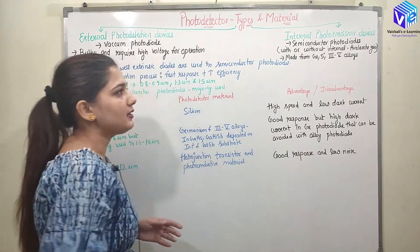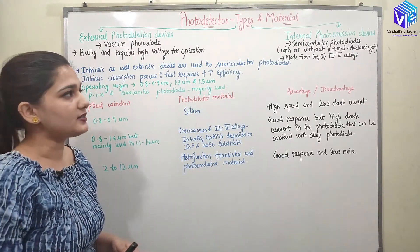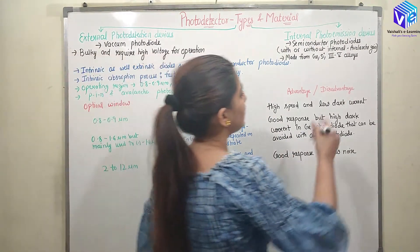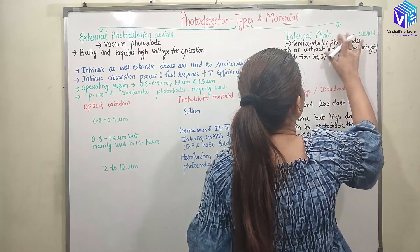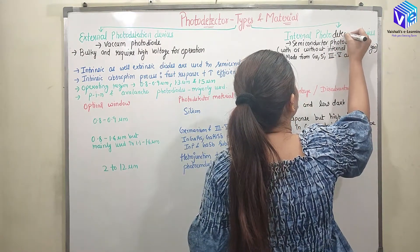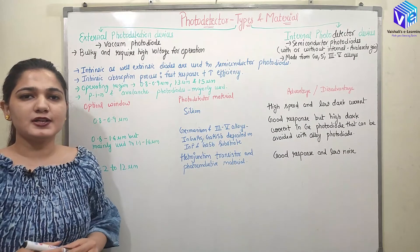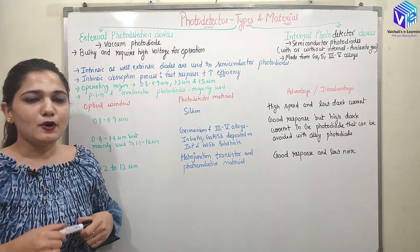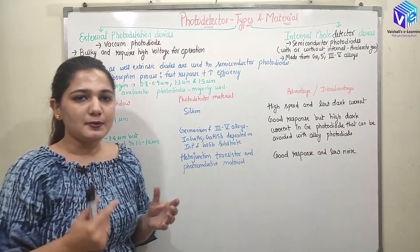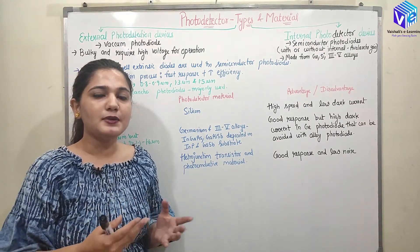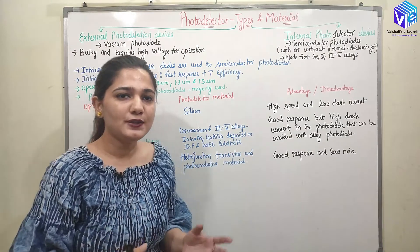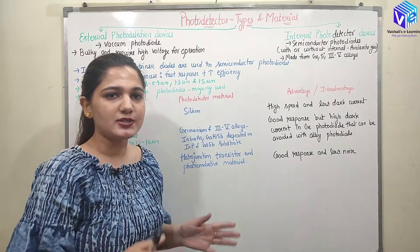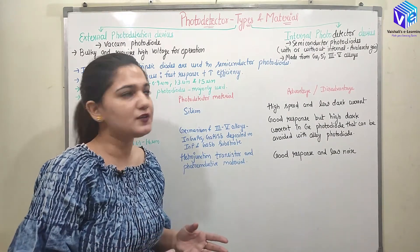Coming to the internal photodetector devices — internal photodetector devices are semiconductor devices. We all know semiconductors are very small and can be fabricated on VLSI chips. So they are internal to the receiver; they do not have to be placed outside. They can be fitted well inside the small structure of the receiver.